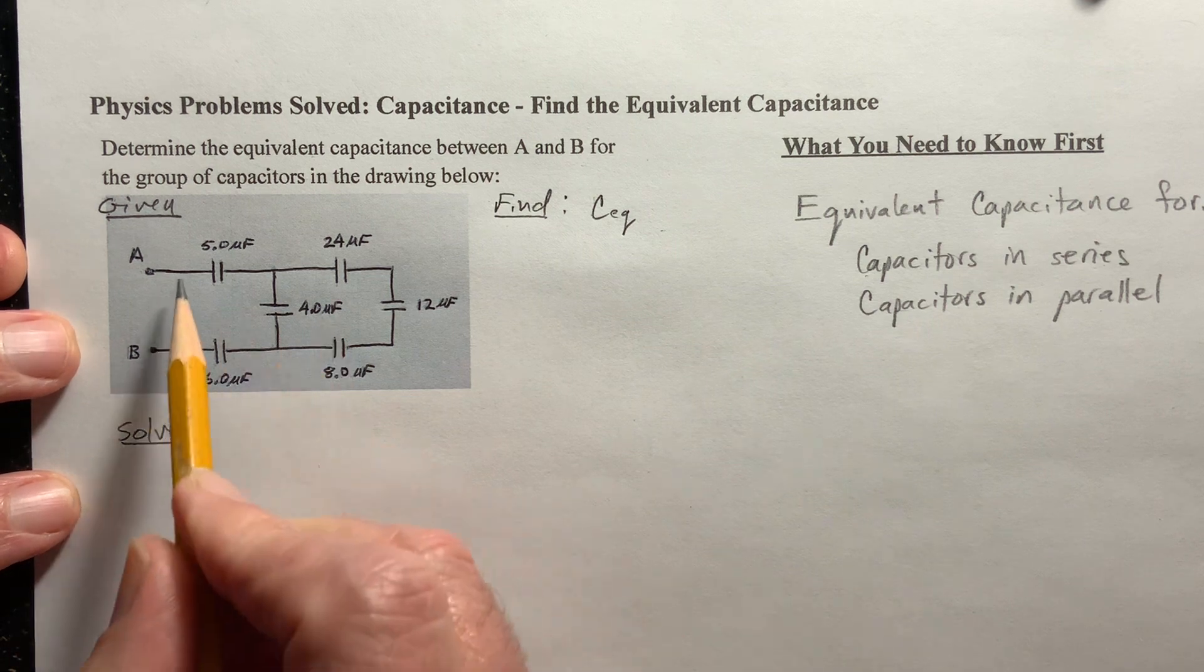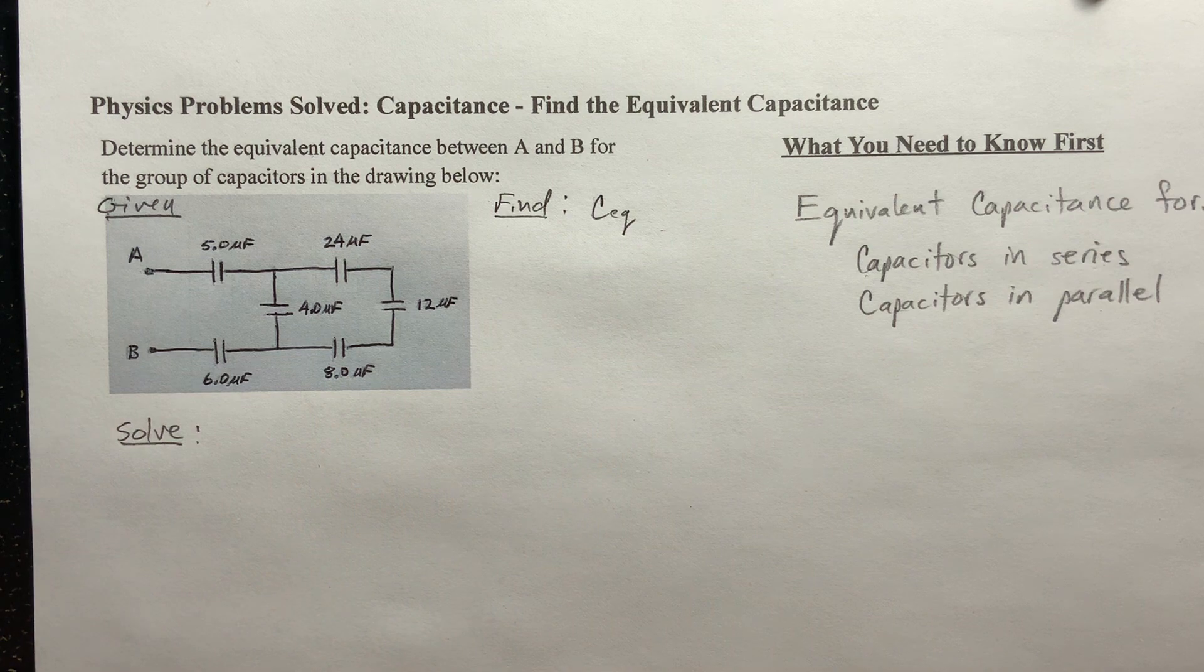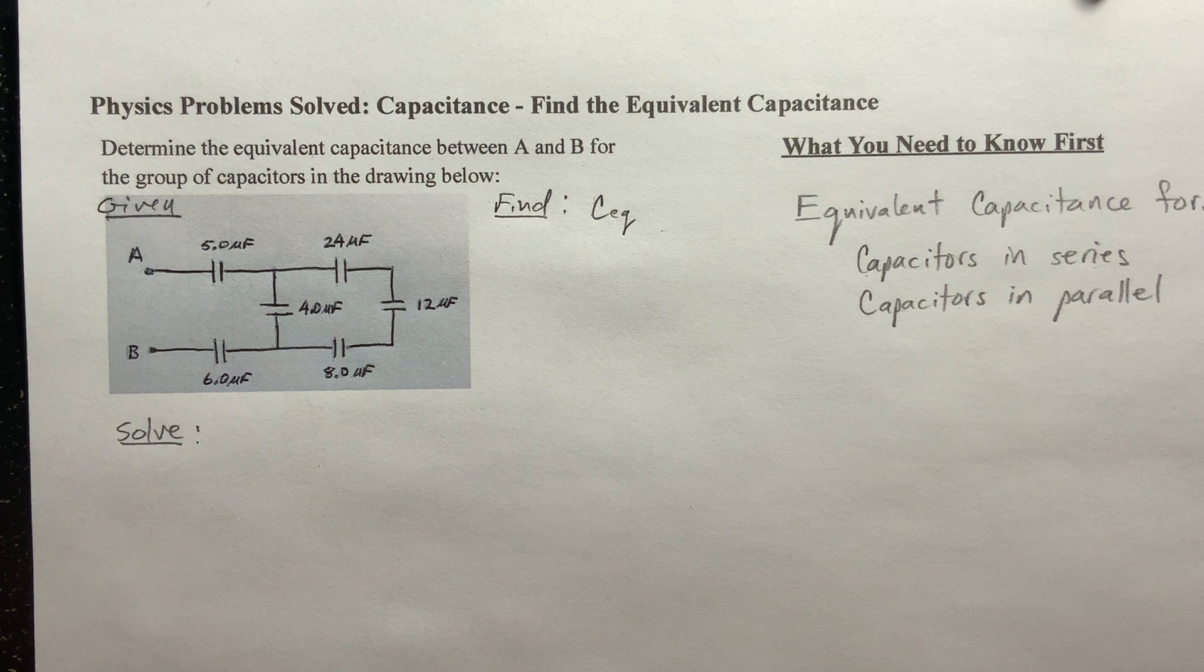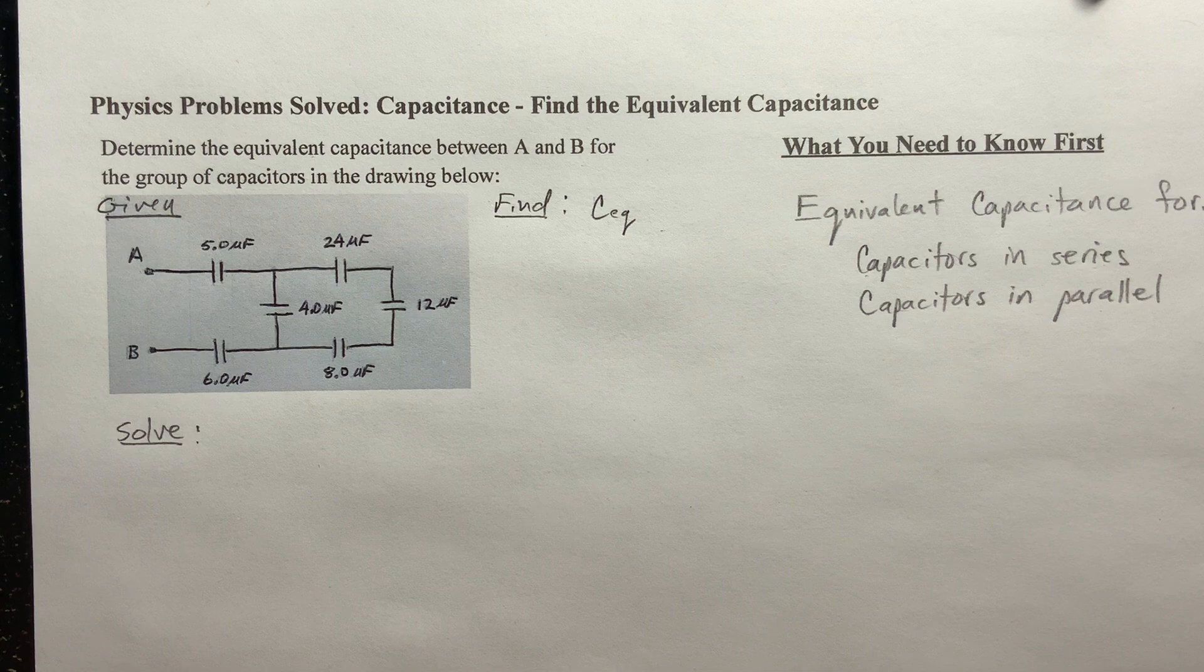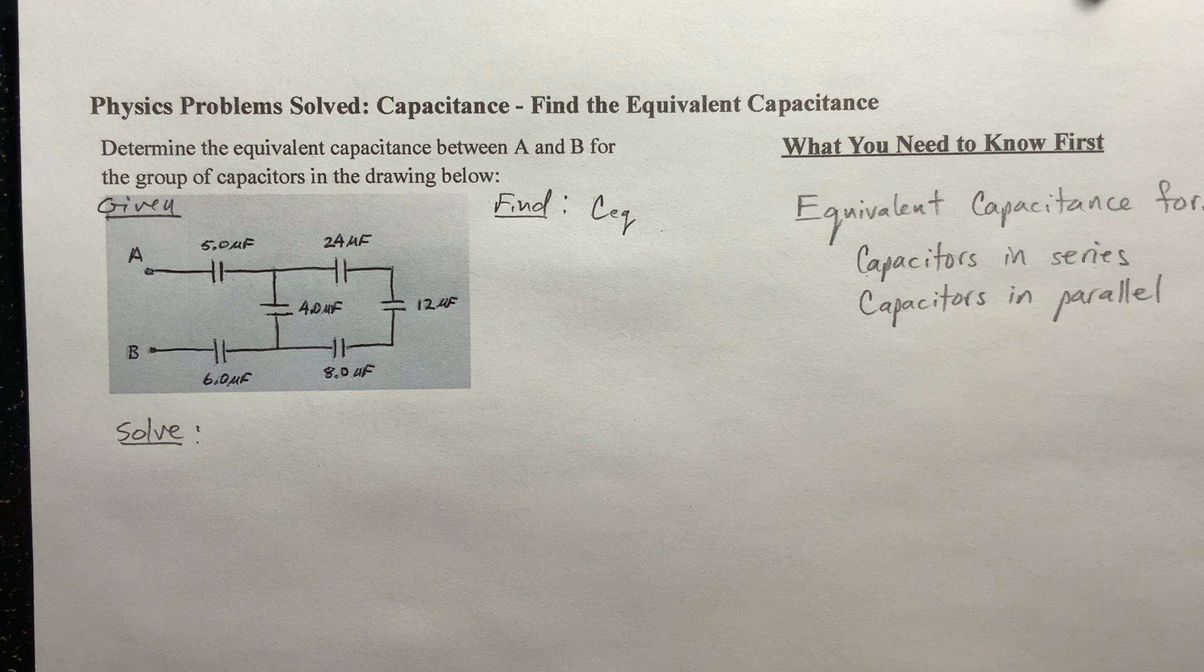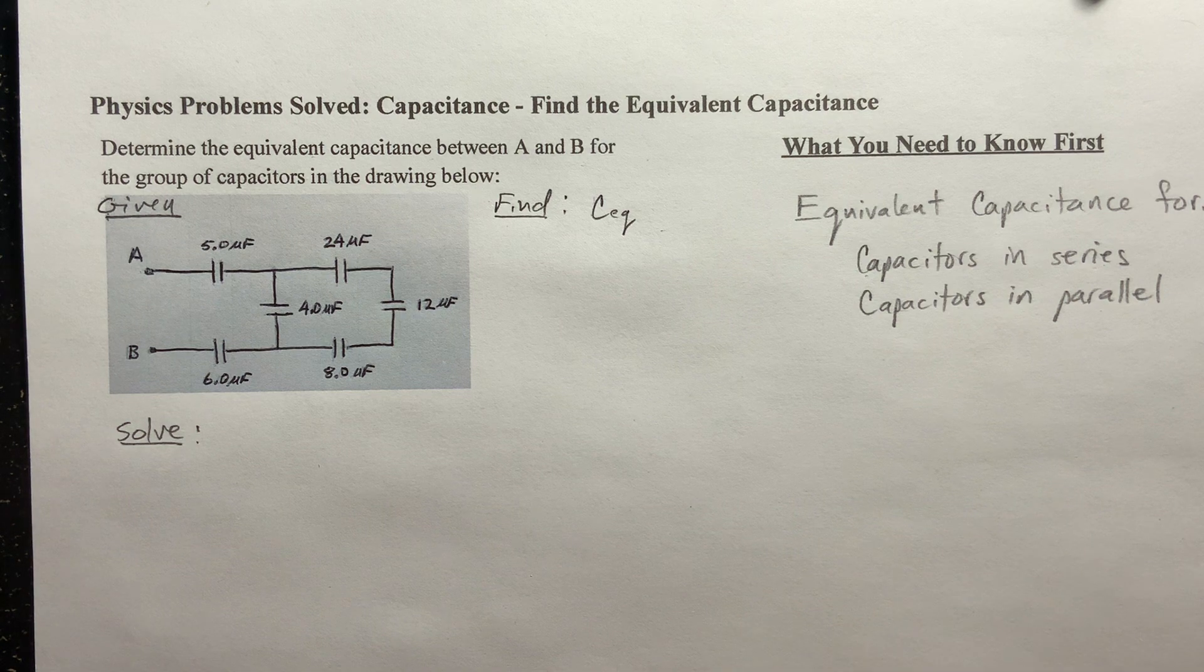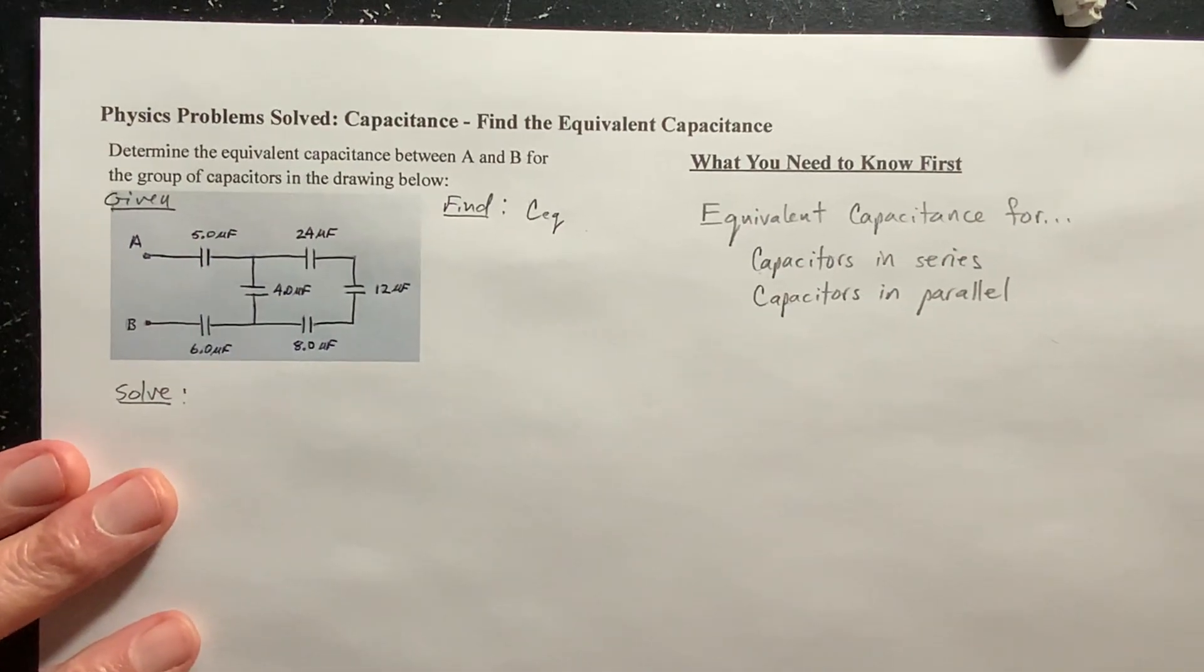So, when you have a bunch of capacitors like this, and you want the equivalent capacitance, you have to look for capacitors that are in series or in parallel, and then reduce them down to one capacitor. And then I suggest you take the time, redraw the circuit, and then look for more capacitors that are in series and parallel, and keep breaking it down until you end up with only one capacitor. And that is the equivalent capacitance.